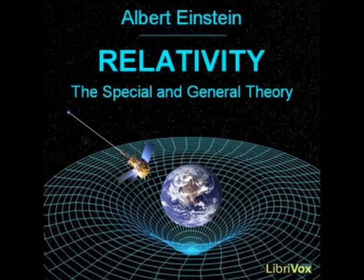Section 21. In what respects are the foundations of classical mechanics and of the special theory of relativity unsatisfactory? Classical mechanics starts out from the following law: material particles sufficiently far removed from other material particles continue to move uniformly in a straight line, or continue in a state of rest. This fundamental law can only be valid for bodies of reference K which possess certain unique states of motion, and which are in uniform translational motion relative to each other.